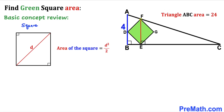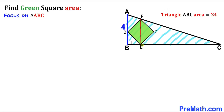If I drop this perpendicular EF, we can see that EF is the diagonal of the green shaded square. Our task is to find the length of this diagonal EF before we can calculate the area of the green square.